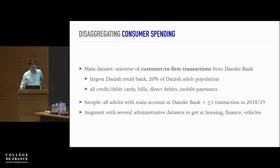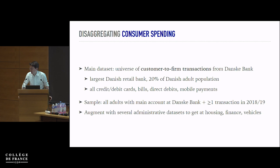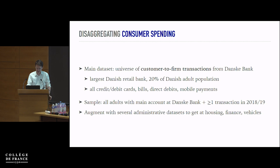For disaggregating consumer spending, the main dataset is the universe of customer-to-firm transactions from Danske Bank, the largest Danish retail bank — about one in five Danish adults is a customer. We see essentially all transactions: credit and debit card transactions, bill payments, direct debits, mobile payments, pretty much everything they use a bank account for. The sample is all adults who report this as their main account to the government and made at least one transaction in 2018 and 2019. We augment this with administrative datasets for harder-to-measure categories such as housing, finance, or vehicles.